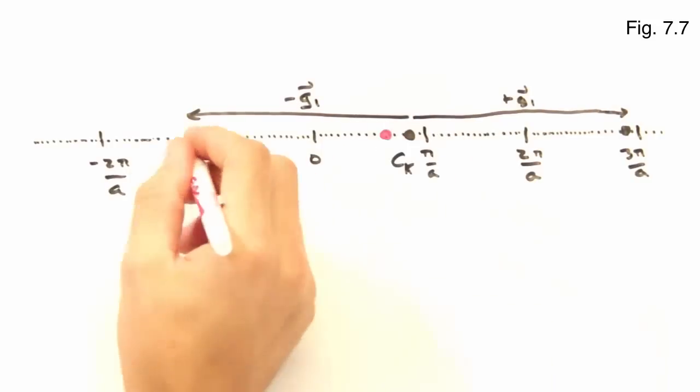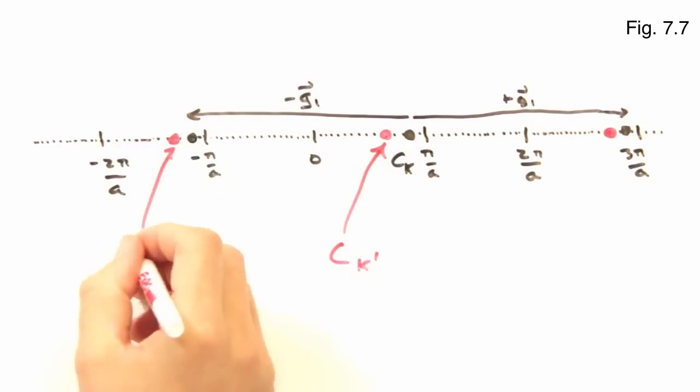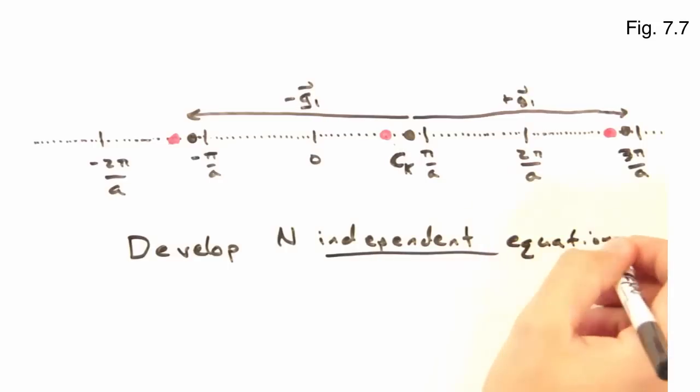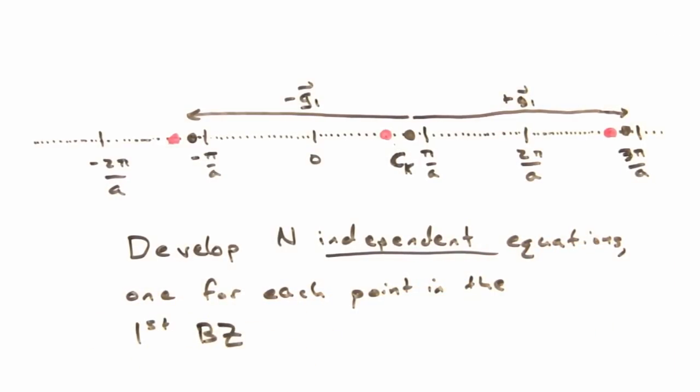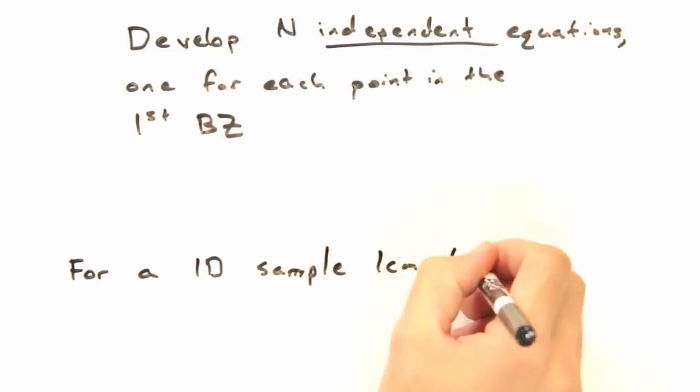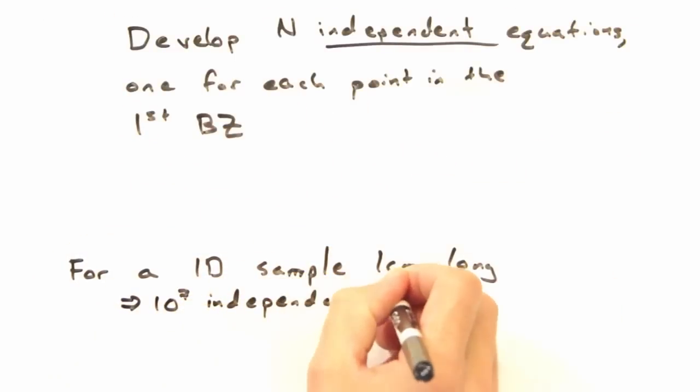But what if I chose to look at this k point here, instead of our original k point? Then we'd go through the same process of summing over g to find those c sub k minus g coefficients. And if we did that for every k point in the first Brillouin zone, we'd end up with n independent equations all of this form. For a one-dimensional sample one centimeter long, that'll give us 10 to the 7th independent points, and we'll be solving each of those by hand.